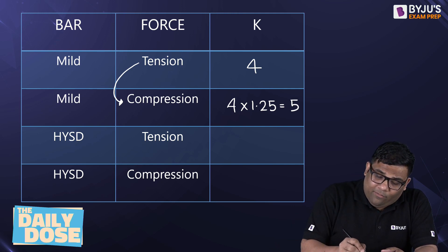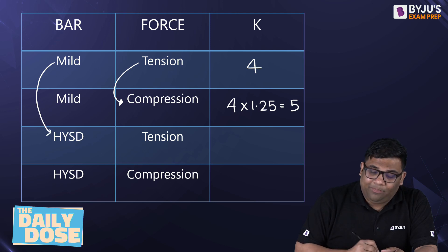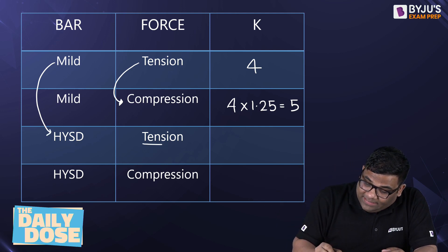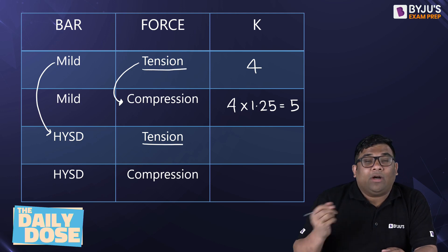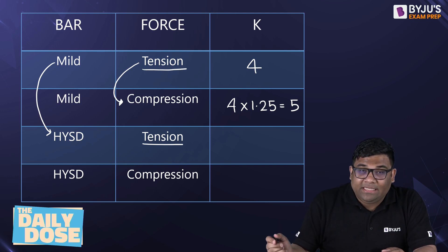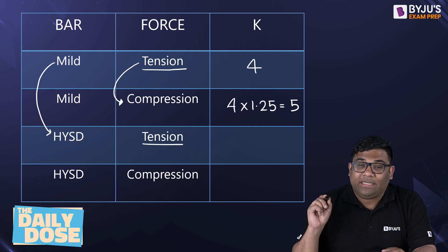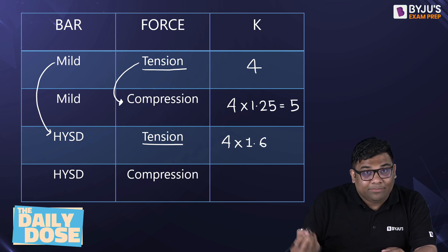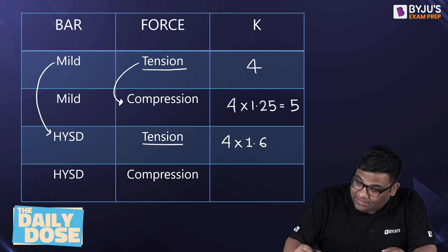Now you see here what happened? Steel changed from mild to HYSD. Force remains same as tension. So what will happen? Mild to HYSD, there will be increase of how much? Increase of 60%. So 4 into 1.6, increase of 60%. So my 1.6, this gives me how much? 6.4, right?